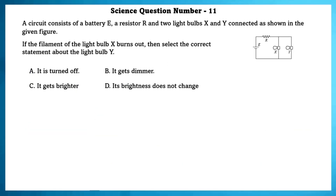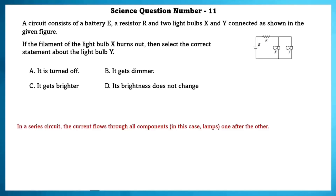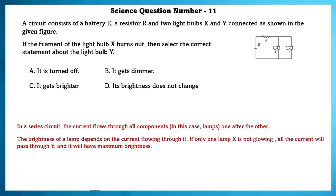Science question number 11. A circuit consists of battery E, a resistor R, and two light bulbs X and Y connected as shown. If the filament of light bulb X burns out, select the correct statement about light bulb Y. In a series circuit, the current flows through all components one after the other. If lamp X is not glowing, all the current will pass through Y, so Y will have maximum brightness. According to this information, option C is the correct answer.